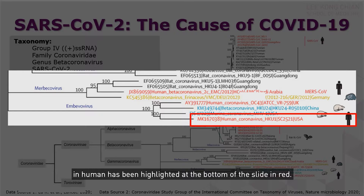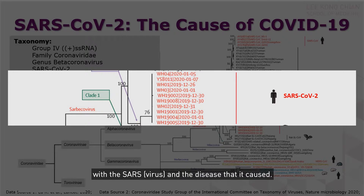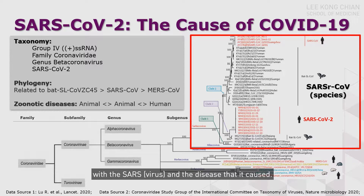Highlighted in red, this coronavirus is now renamed as SARS-CoV-2 because of its close sequence relationship with SARS and the disease that it caused.